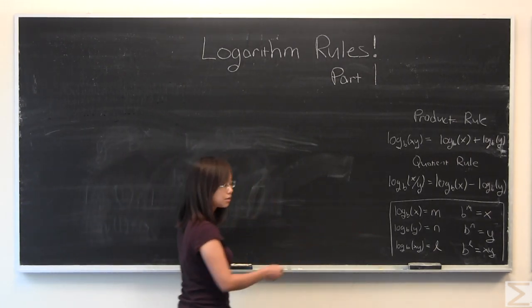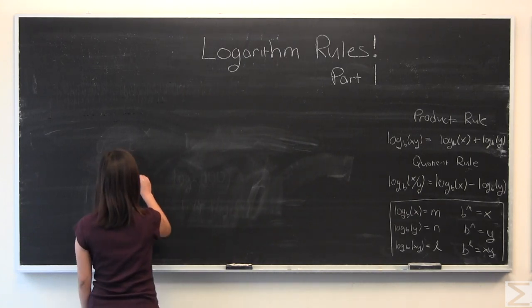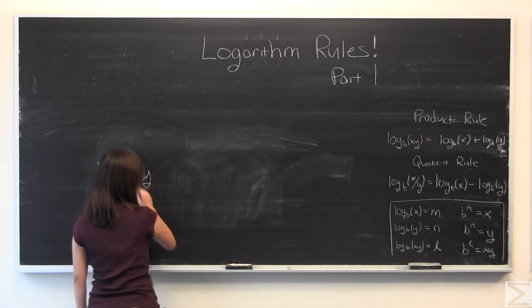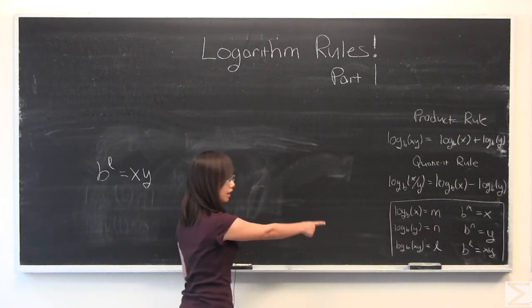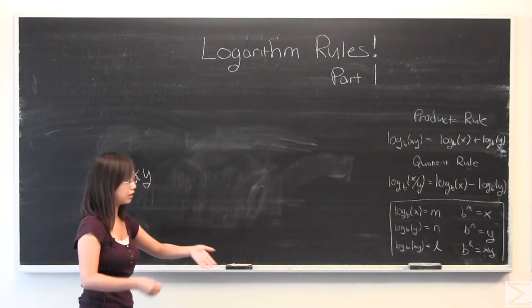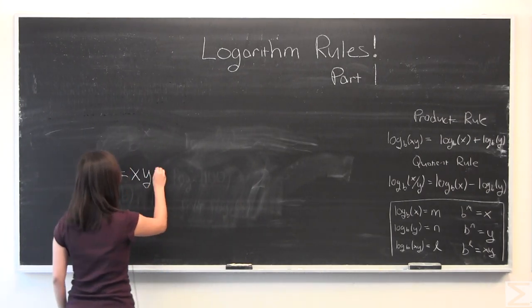b to the power of l is equal to xy. I'm going to substitute b to the power of m for x, b to the power of n for y. And I have these logarithms. And I've written the equivalent statement, so it's very clear what I'm doing here.